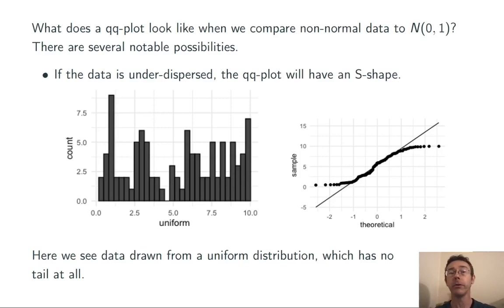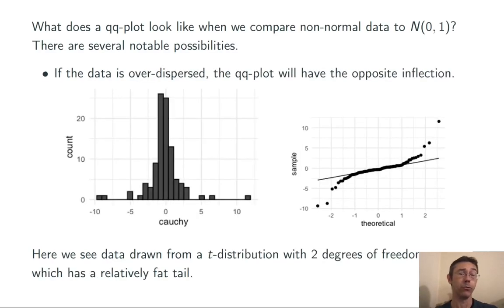If the data is under-dispersed, in other words, if it's squeezed in together more than in a normal distribution, then the QQ plot is going to have an S-shape, kind of like I'm showing here. Notice that on the left end, it is above the sort of line of fit, and on the right end, it is below it. Here, I've drawn the data from a uniform distribution.